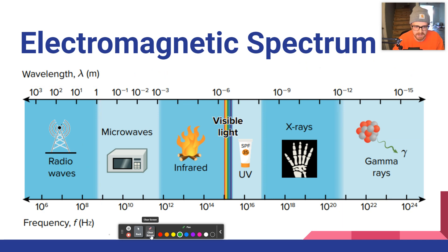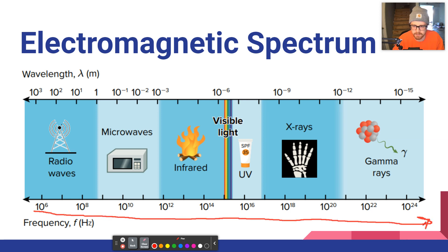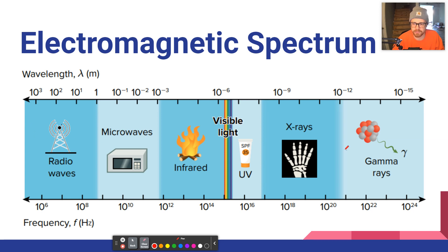Frequency increases as we go from radio waves all the way to gamma rays. Up top with wavelength, as frequency increases, wavelength decreases — so we're going from higher wavelength to lower wavelength. Gamma rays have the smallest wavelength and the highest energy, while radio waves have the lowest frequency, the largest wavelength, and the lowest energy.